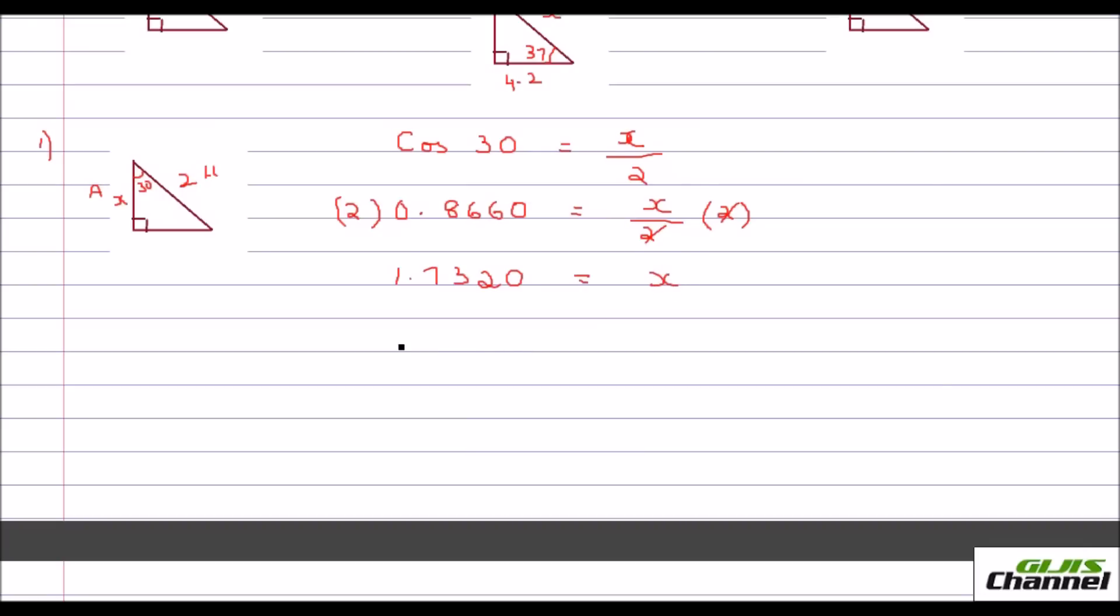Now we have got the side x. x is the adjacent side. And we have got it as 1.7320. You can make it, since it is the side length, you can have just one number after the decimal place. Since the second number is less than 5, you can just omit this. And your answer would be, your x value would be 1.7.